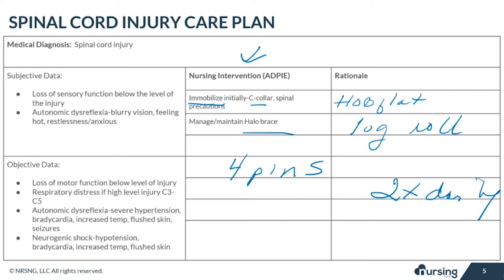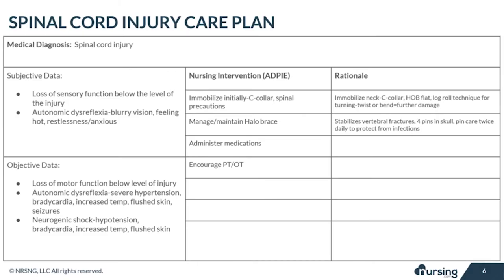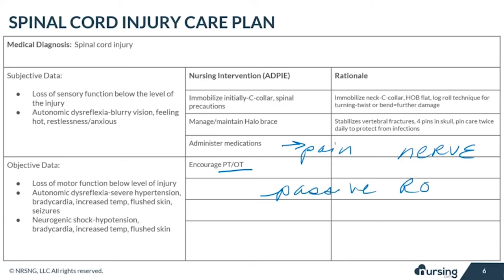A wrench should be kept at the bedside in case the halo vest needs to be removed for chest compressions. As far as medication administration, analgesics and muscle relaxants are commonly used because of pain from the initial trauma as well as neuropathic pain due to nerve injuries. Muscle relaxants like cyclobenzaprine and gabapentin can help ease muscle spasms or nerve pain. PT and OT can help maintain whatever functional ability remains, and passive and active range of motion can help prevent atrophy and contractures.